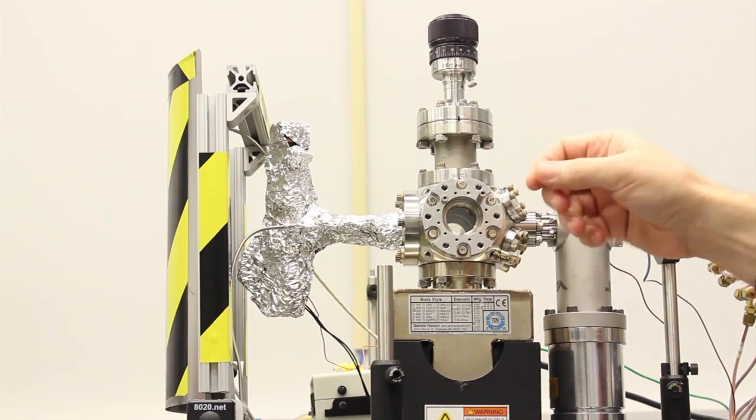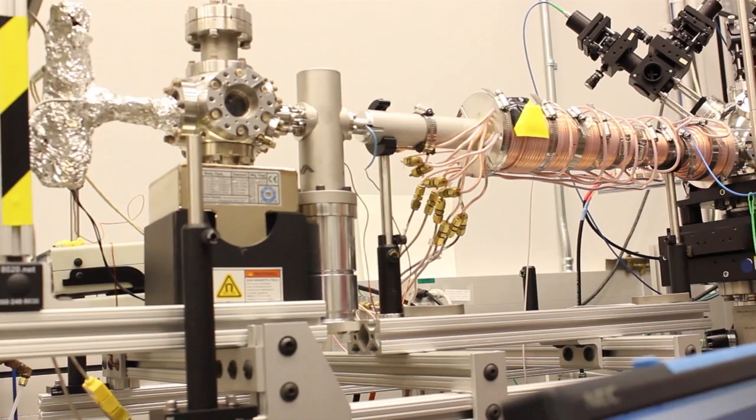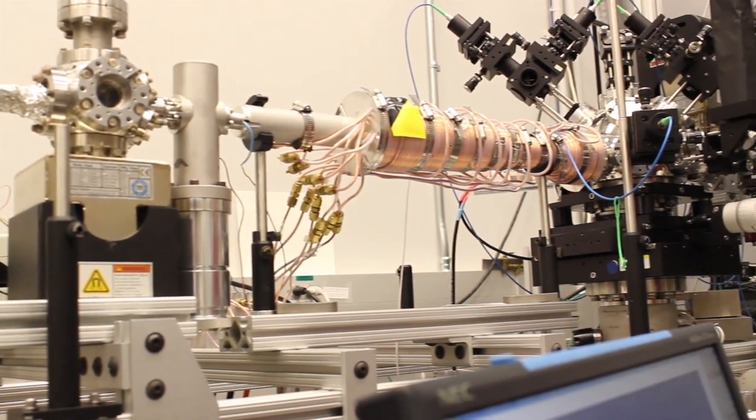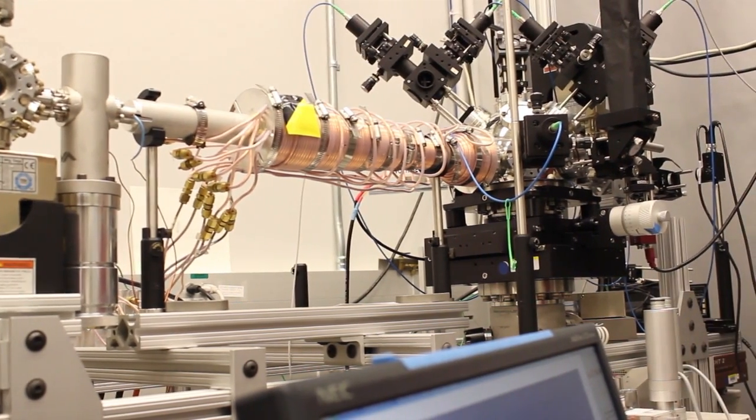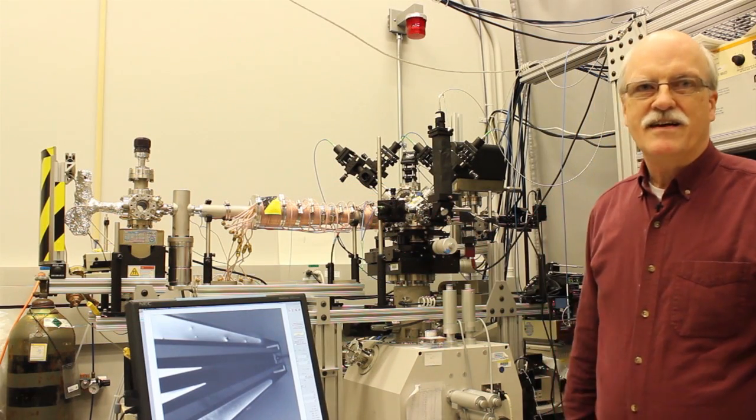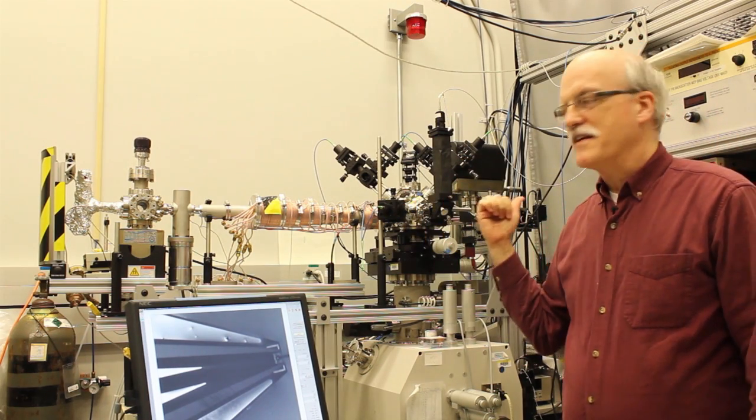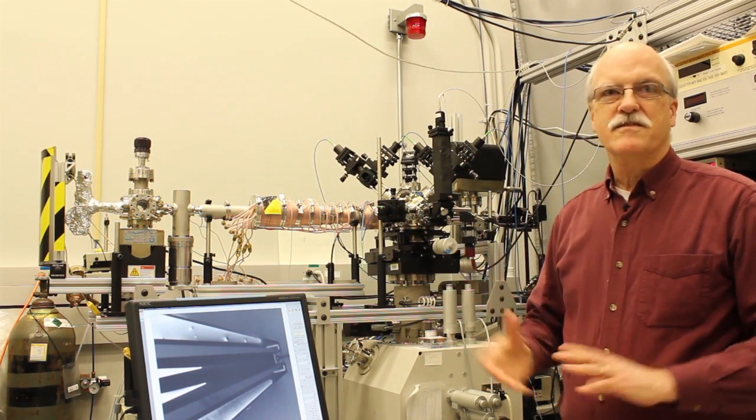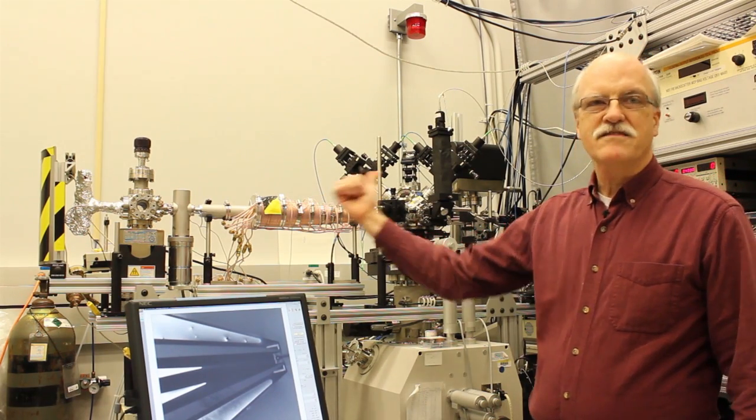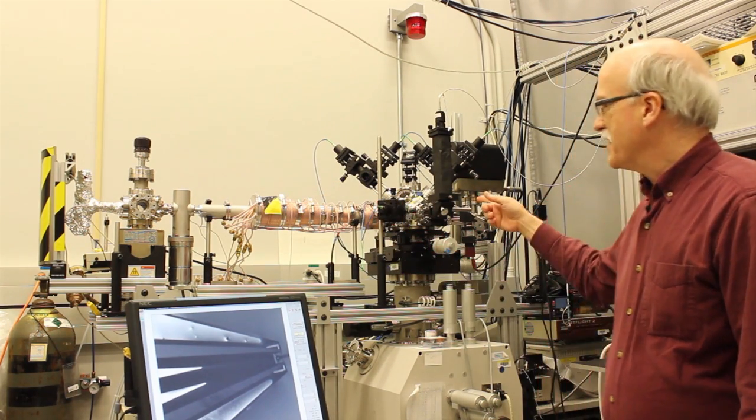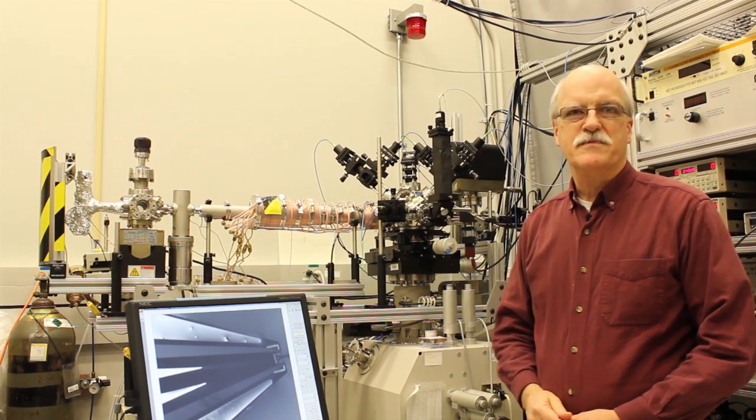When it gets heated, the lithium evaporates and makes a vapor, and the atoms start streaming down this tube. We hit them with a laser from the other side, and when you scatter photons off these lithium atoms, you can actually slow them down. They get really slow—they start out at a thousand meters per second, and by the time they get in here, they're only going about 50 meters per second.